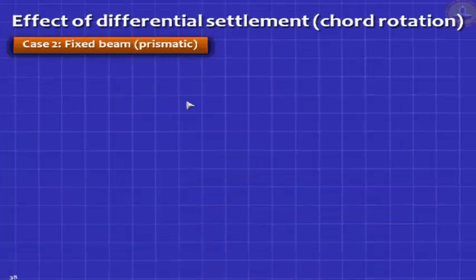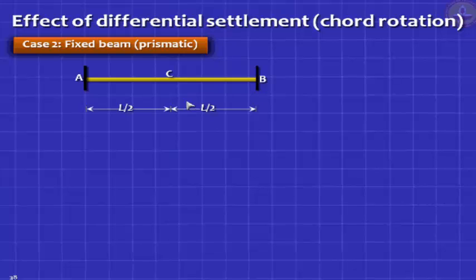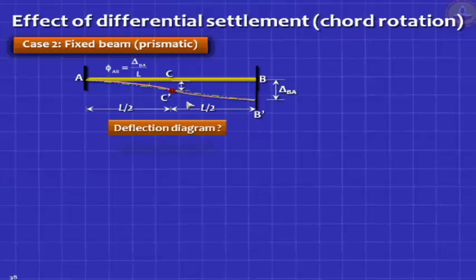Now, let's take another case where both ends are fixed. Okay. So, we need not draw 2 pictures, 1 picture. A, B, both ends are fixed. Let's say B goes down. You have a same clockwise chord rotation of delta by L clockwise. What is the deflected shape? Can you try drawing the deflected shape? Now, the shape you draw will have a reverse curvature. Because slope at A must be 0 and slope at B must also be 0. And you will have a point of contraflexure at the mid span C. You have to draw something like this, necessarily. Right?